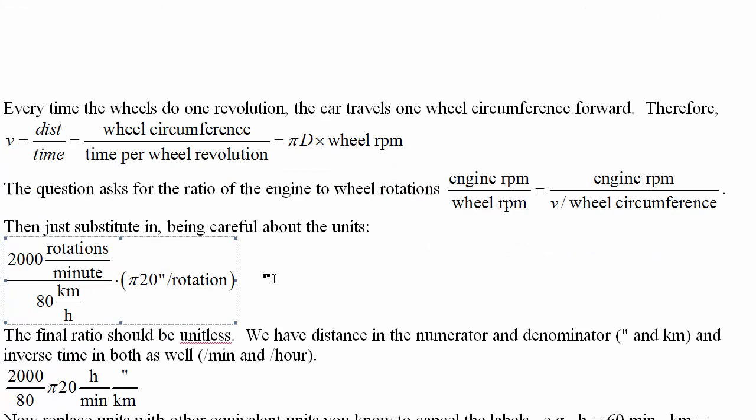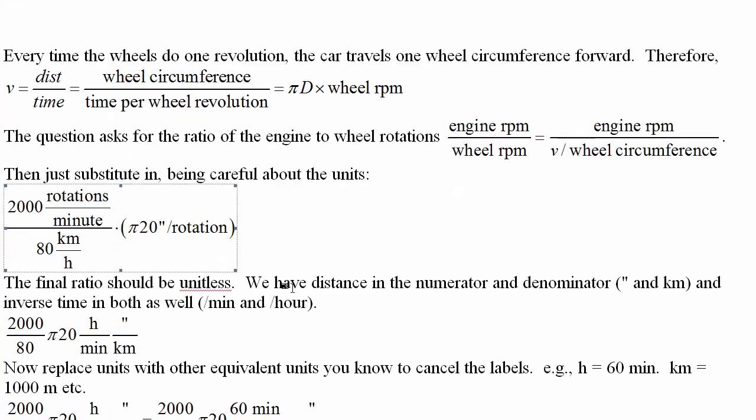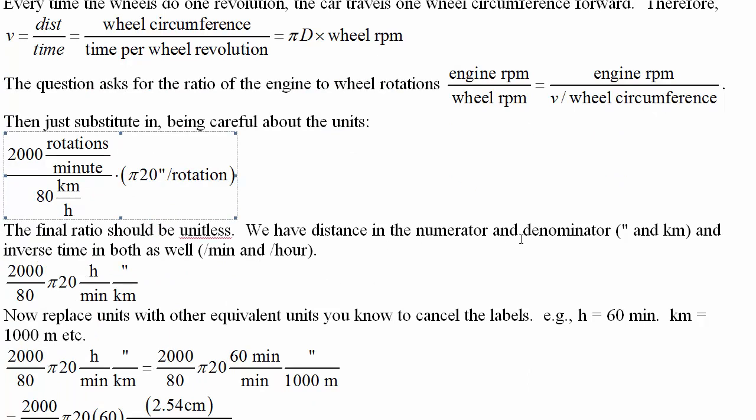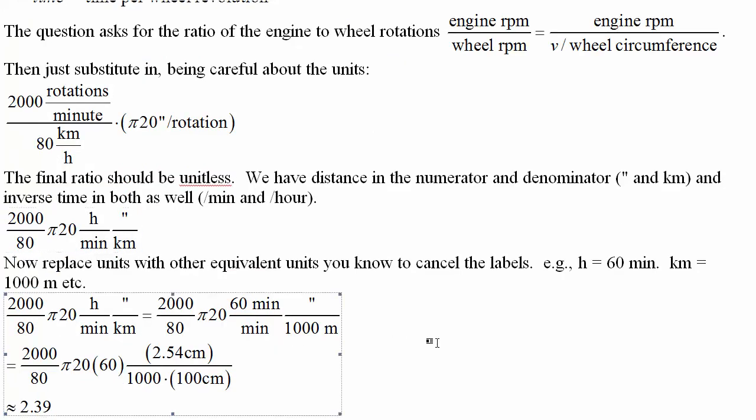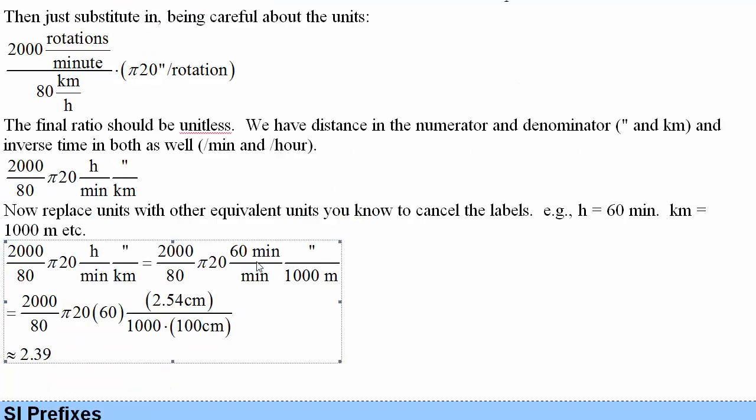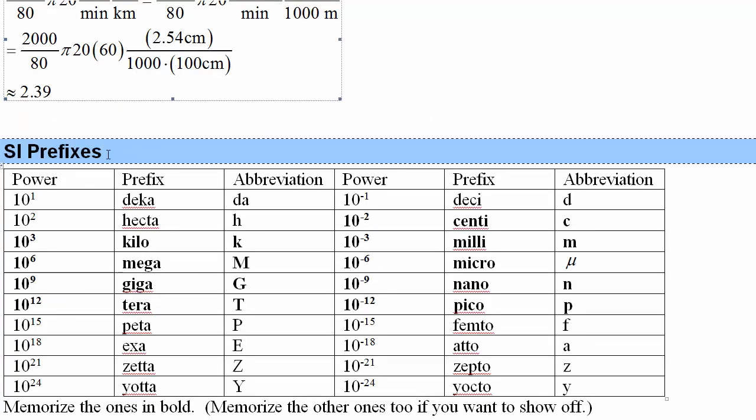Unfortunately, it's in a bunch of different units, so we need to do some work to clean that up. The final ratio should be unitless. We have our distance in the numerator and denominator in inches and kilometers, and we have inverse time in both as well, so per minute and per hour. Rewriting that by getting rid of the fractions in fractions, then replacing units with equivalent ones. So we know that an hour is 60 minutes to cancel the minutes, and we can substitute in that a kilometer is 1000 meters and an inch is 2.54 centimeters, where a meter is 100 centimeters, to come up with an engine to wheel gear ratio in this particular case of 2.39.